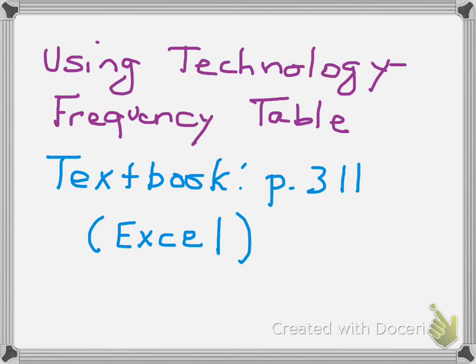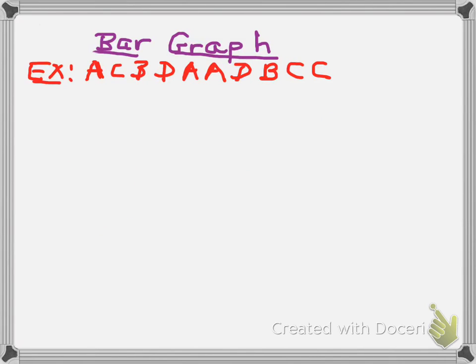If you want to make a frequency table using technology, I will point you to a place in your textbook, which is page 311. And as I said before, they use Excel. Next, we're going to use the first two columns, which are the grade and frequency column, to construct what we call a bar graph. So we're going to use the example that we already used, and the data is listed here. And I will point you to the frequency table that we just constructed to make this bar graph.